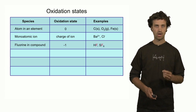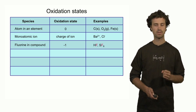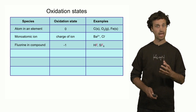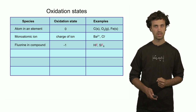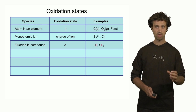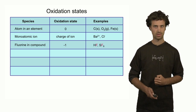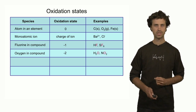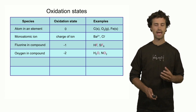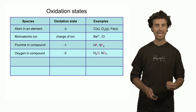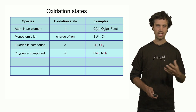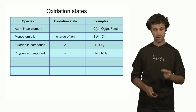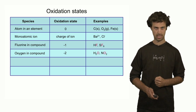The third rule says that the oxidation state of fluorine in a compound is minus one. So the fluorine atom in hydrofluoric acid has oxidation state minus one. Now, each of the fluorine atoms in sulfur hexafluoride also has oxidation state minus one. Rule number four says that oxygen as part of a compound has oxidation state minus two. So the oxygen in water has oxidation state minus two, and the two oxygens in nitrogen dioxide also have oxidation state minus two.